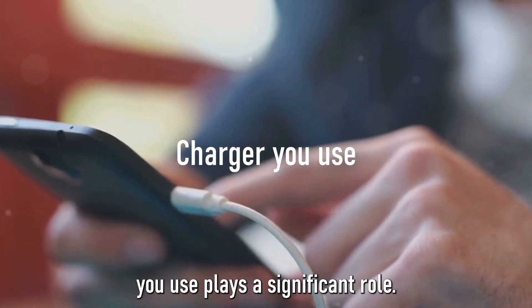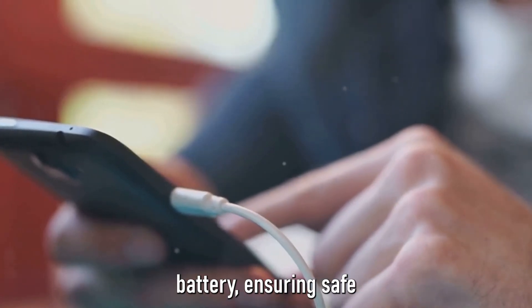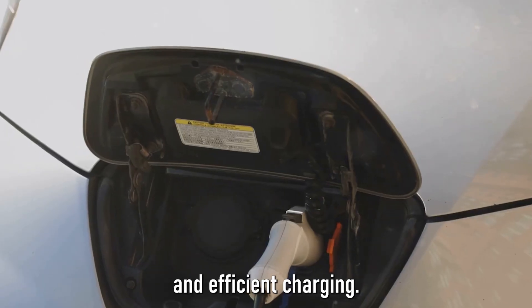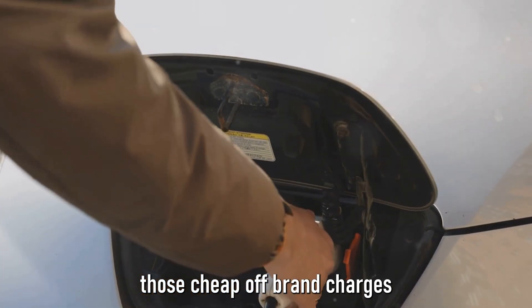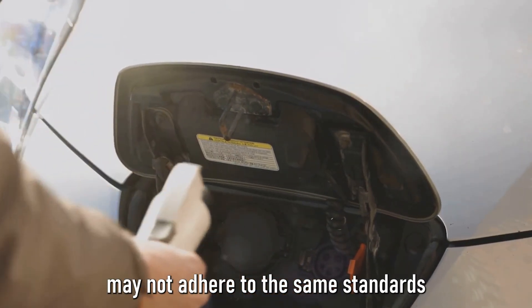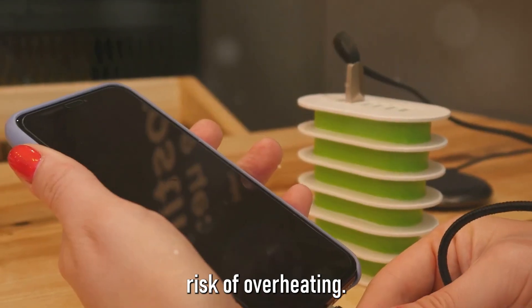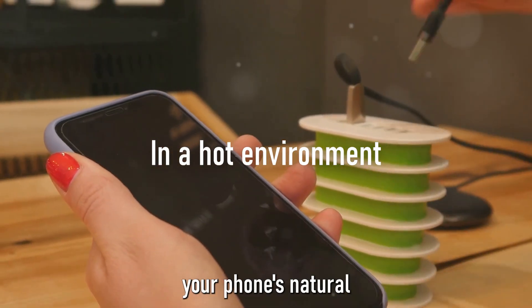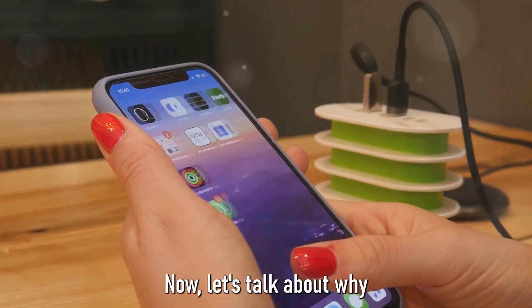Secondly, the kind of charger you use plays a significant role. Authentic chargers are designed specifically for your phone's battery, ensuring safe and efficient charging. On the other hand, those cheap, off-brand chargers you find at the corner store may not adhere to the same standards, leading to an increased risk of overheating. Thirdly, if you're in a hot environment, your phone's natural cooling process can struggle to keep up, exacerbating the issue.